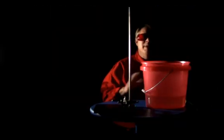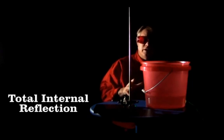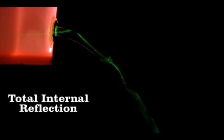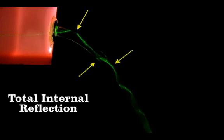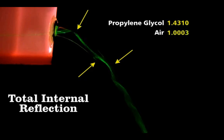The light follows the liquid flow all the way to the bucket — amazing! It does this because of total internal reflection. As the light enters the stream, it is reflected as soon as it hits the interface between air and liquid. You can see here the first reflection, then the second, and the third. This occurs because there's a difference between the index of refraction of the guide material — here propylene glycol — and the outside air.